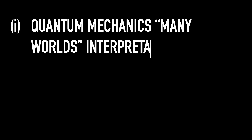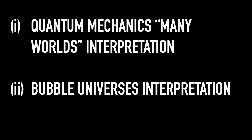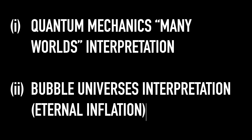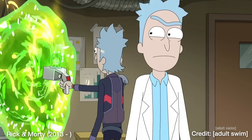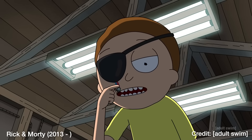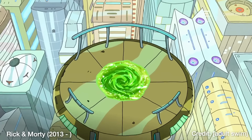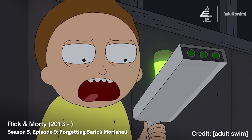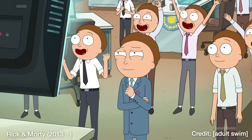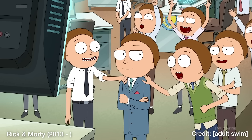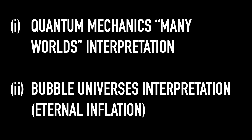Those two types are: the quantum mechanics many worlds interpretation — as Rick and Morty would say, 'do you guys just put the word quantum in front of everything?' — or bubble universes. What's cool is that events in the show make it obvious which version of the multiverse holds true in Rick and Morty canon.